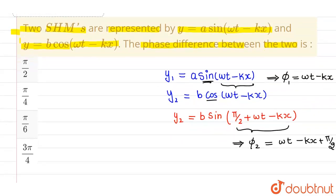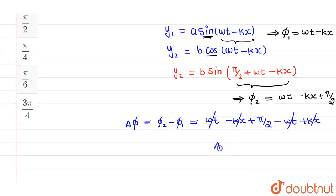Phase difference which is denoted by delta phi will be equals to phi 2 minus phi 1. Now phi 2 is omega t minus kx plus pi by 2, minus phase 1 which is omega t minus kx. Omega t and minus omega t will cancel out. Similarly, minus kx and plus kx will cancel out and we will be left with delta phi equals to pi by 2.